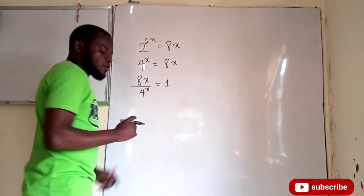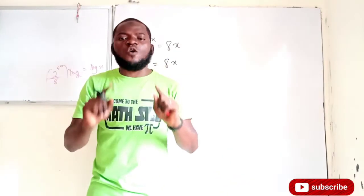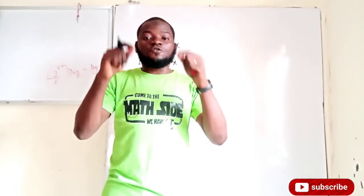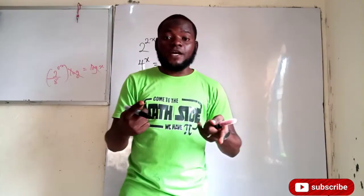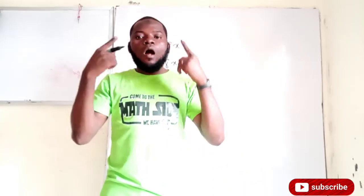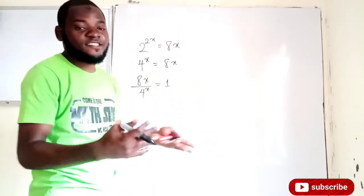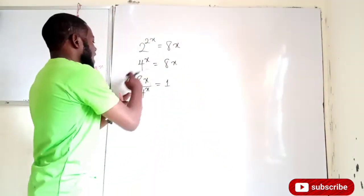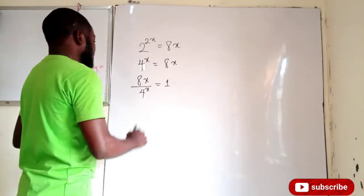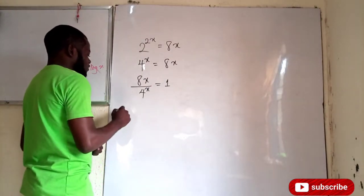If I divide both sides by 8 — because whenever they ask you to solve an equation, what they are telling you is to make x the subject of the formula — so after dividing by 8, I have x divided by 4 to the power of x equals 1 over 8.